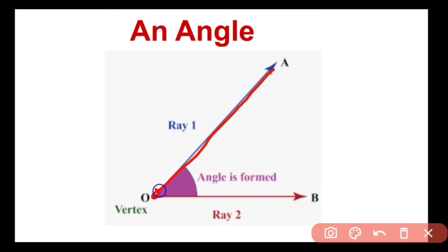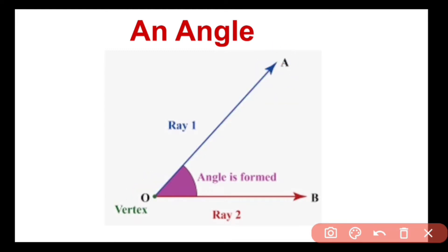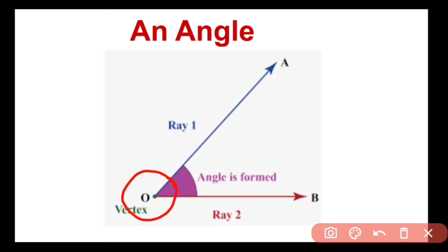Point O is the starting point or origin. We have seen the meaning of ray in our previous chapter, chapter number one. The ray starts at point O and goes forward in the direction of A where we can see the arrowhead. So the name of ray 1 is ray OA and the second ray is ray OB. Both these rays are intersecting each other at point O, which is known as the vertex of that angle. An angle is formed when two rays meet or intersect each other at one point.